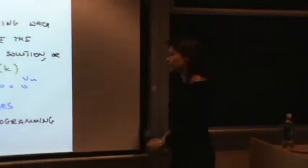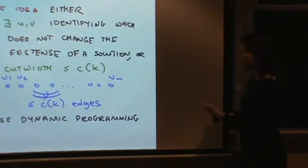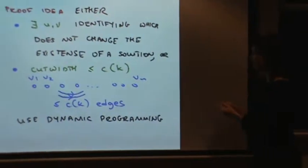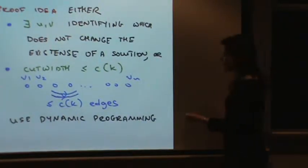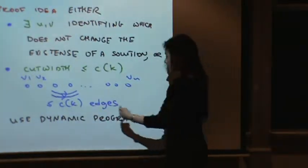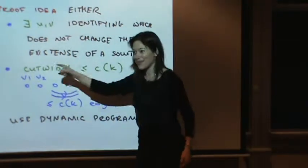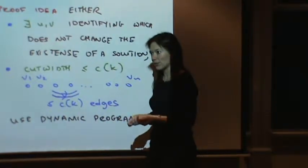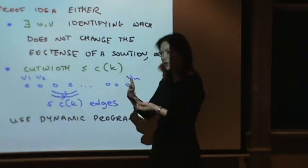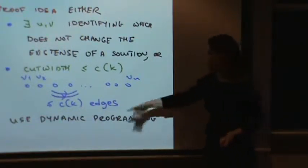Then they can do the dynamic programming. I have this ordering that witnesses that the cut width is small, and now I try and see what pairs of vertices I can connect. But the thing is, because not too many edges go this way, paths cannot wiggle too much across any gap. That allows you to do the dynamic programming in polynomial time, because the complexity level at which the solution gets more complicated every step is bounded because of this C.